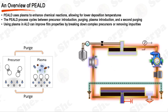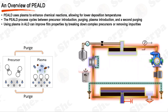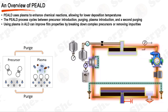The advantages of PEALD include lower deposition temperatures, making it suitable for temperature-sensitive substrates, and improved film properties as the plasma can break down complex precursors or remove impurities from the film during deposition. This results in films of high purity, excellent conformality, and low impurity levels. However, PEALD systems are more complex and expensive than thermal ALD systems due to the need for plasma generation and handling. Moreover, the plasma can potentially damage the substrate or the deposited film, especially for sensitive materials or structures. Therefore, careful process optimization is necessary when using PEALD.